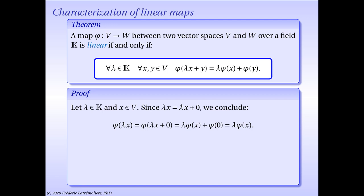With this in mind, let lambda be a scalar and x a vector in V. Since lambda x equals lambda x plus the zero vector, we conclude that phi of lambda x equals phi of lambda x plus 0. Applying the highlighted property that phi possesses, phi of lambda x equals lambda phi of x plus phi of 0. But we've just shown that phi of 0 is the zero vector. Since the zero vector in W is neutral for addition, we conclude that phi of lambda x equals lambda phi of x. We already proved that phi was additive, so together these two properties mean that phi is linear.